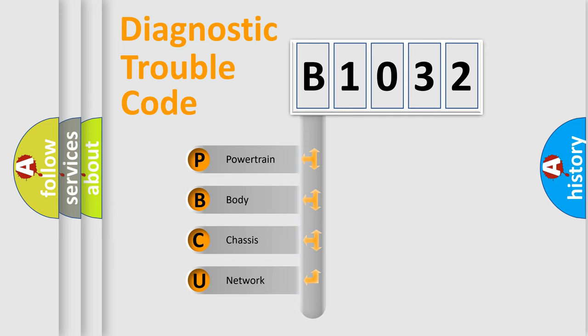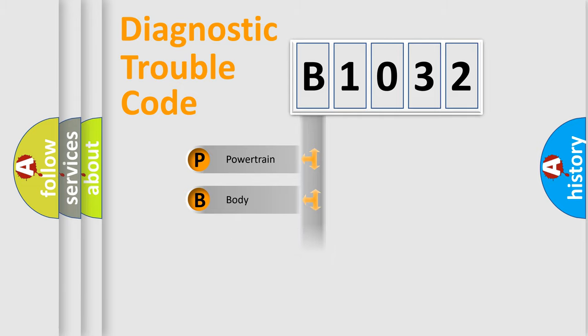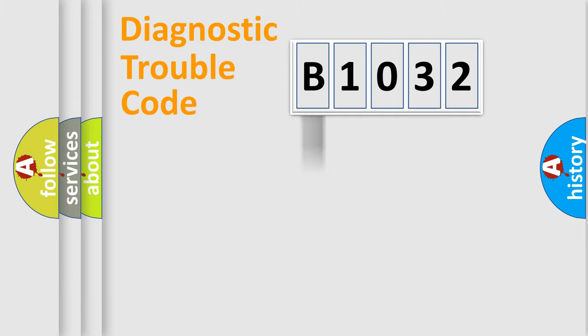We divide the electric system of an automobile into four basic units: Powertrain, Body, Chassis, and Network.